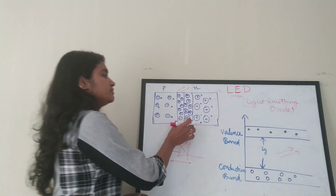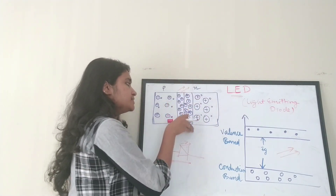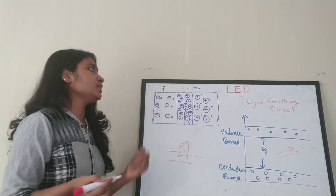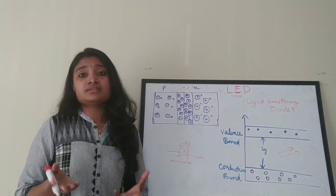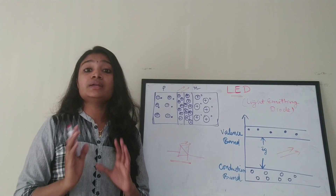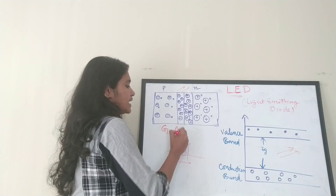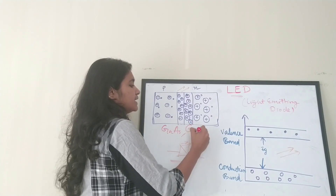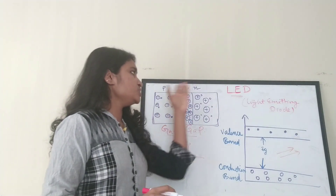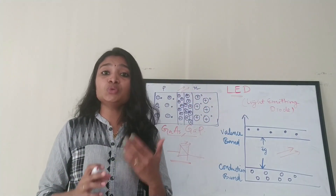Generally, for a P-N junction diode the materials used are silicon or germanium, but in the case of LEDs it is either gallium arsenide or gallium phosphide, etc. These types of materials are used for the manufacturing of LEDs, and due to this the recombination of electrons and holes generates light.